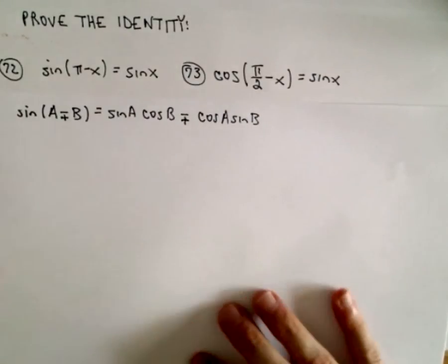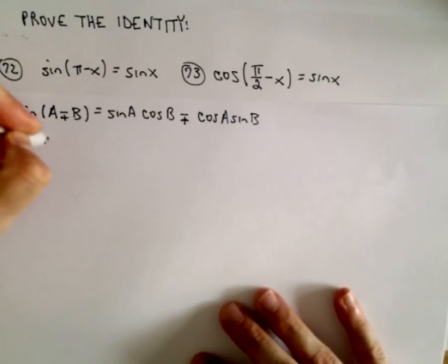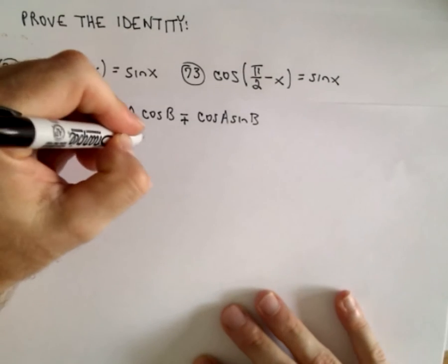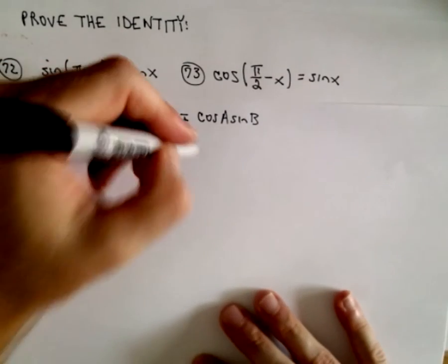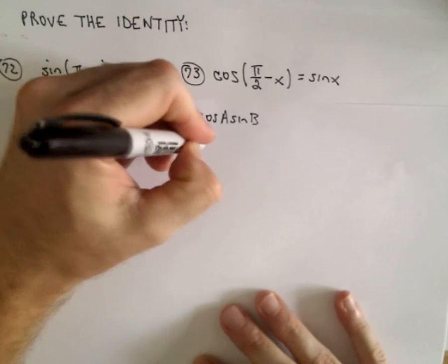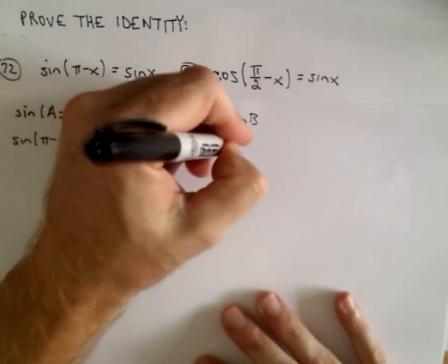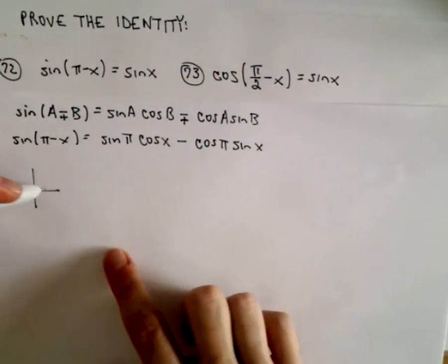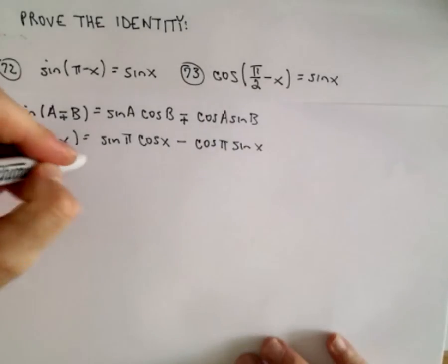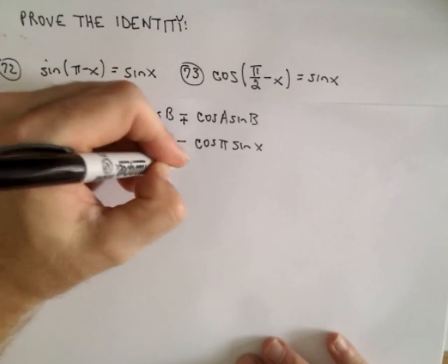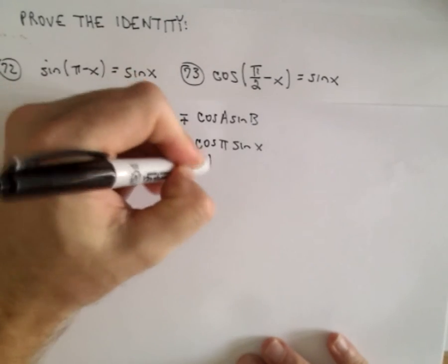Okay, so if we apply this identity to sin(π - x), we'll just get sin π times cos x minus cos π times sin x. And recall, well, in terms of the unit circle, sin π is going to give us zero. Cosine of π is going to give us negative one.